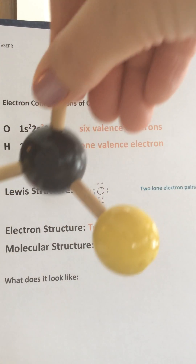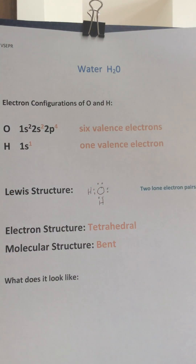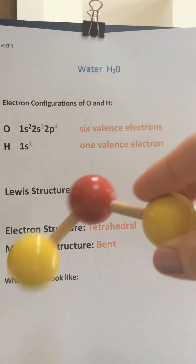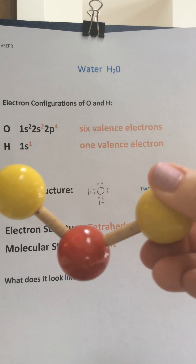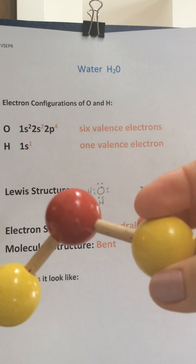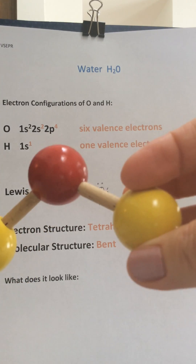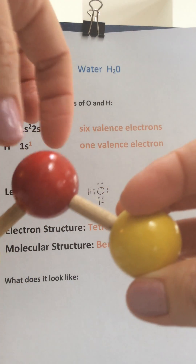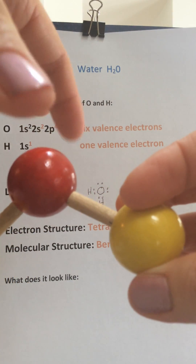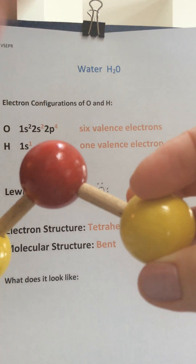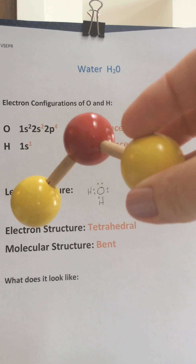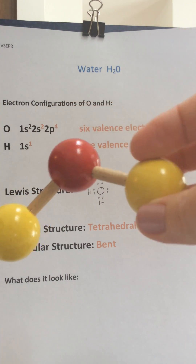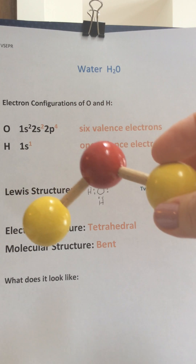Now, what does it really look like? This is what the molecular geometry would look like — it's got 2 hydrogens attached to the central oxygen. And there are 2 lone pairs coming off of here. So that's the valence shell electron pair repulsion model in a nutshell.